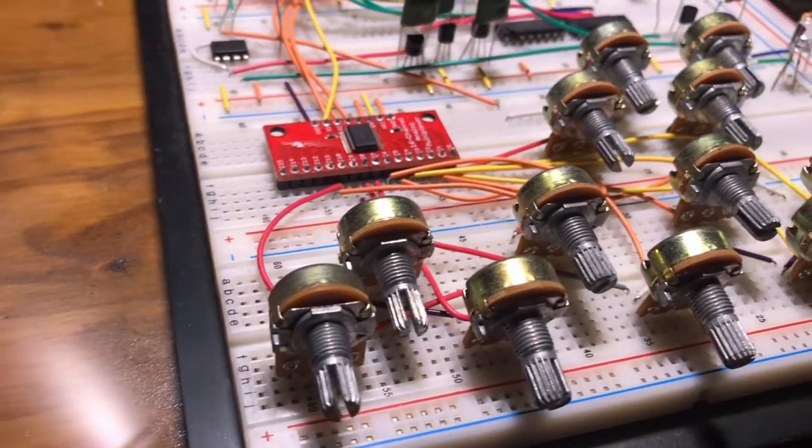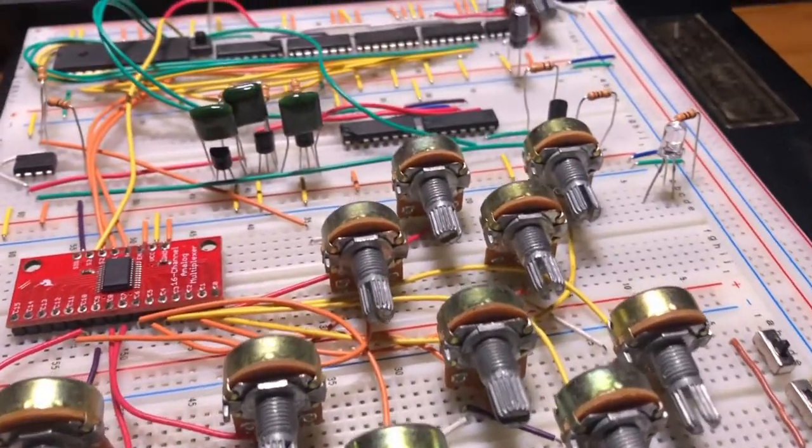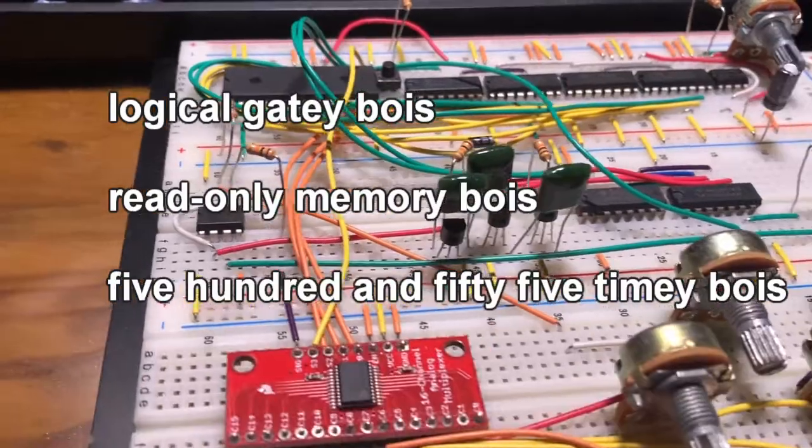This is a music box. It has a range of three octaves and can be programmed to play a song. There is no microprocessor, just digital logic, a ROM chip, and some timers. Here's how I built it.